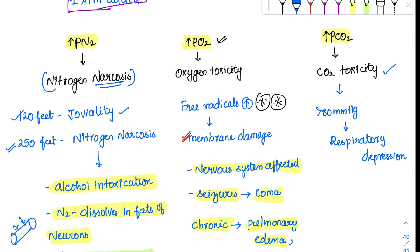Then there is CO2 toxicity. We know that CO2 enhances respiration. But whenever it goes beyond a certain limit — like beyond 80 mmHg — it will cause respiratory depression. Even the CO2 action is reversed, causing respiratory depression in cases of severely elevated partial pressure.